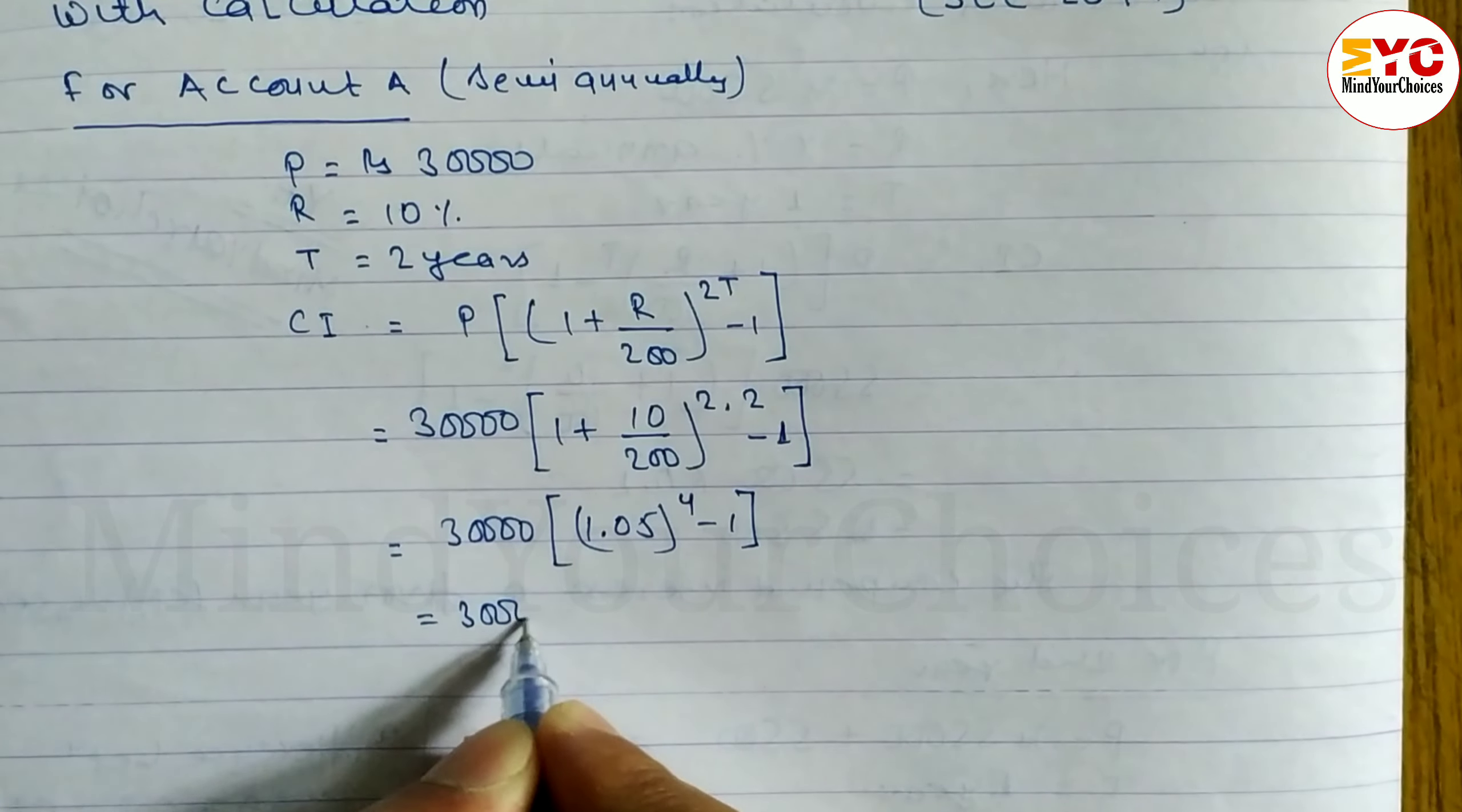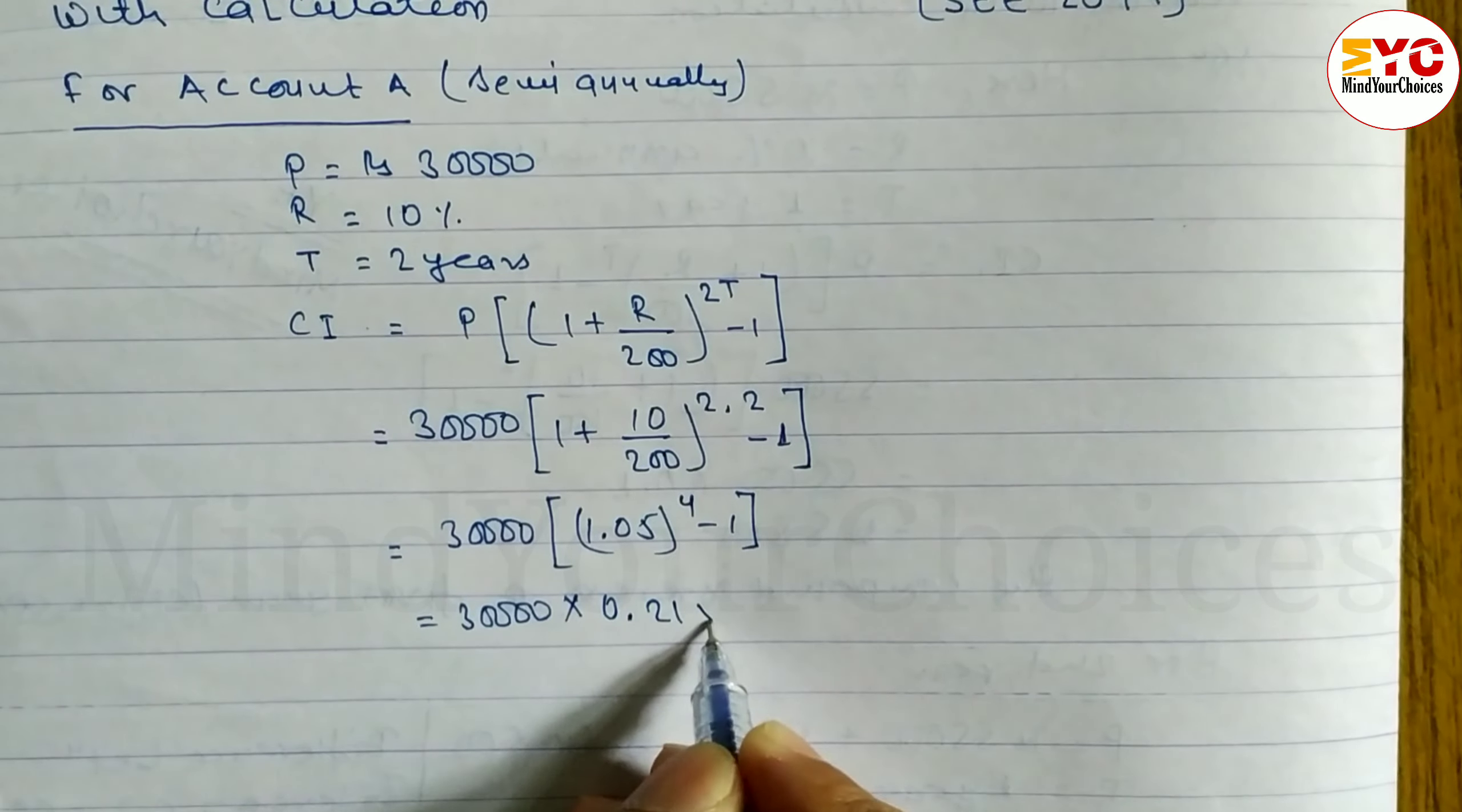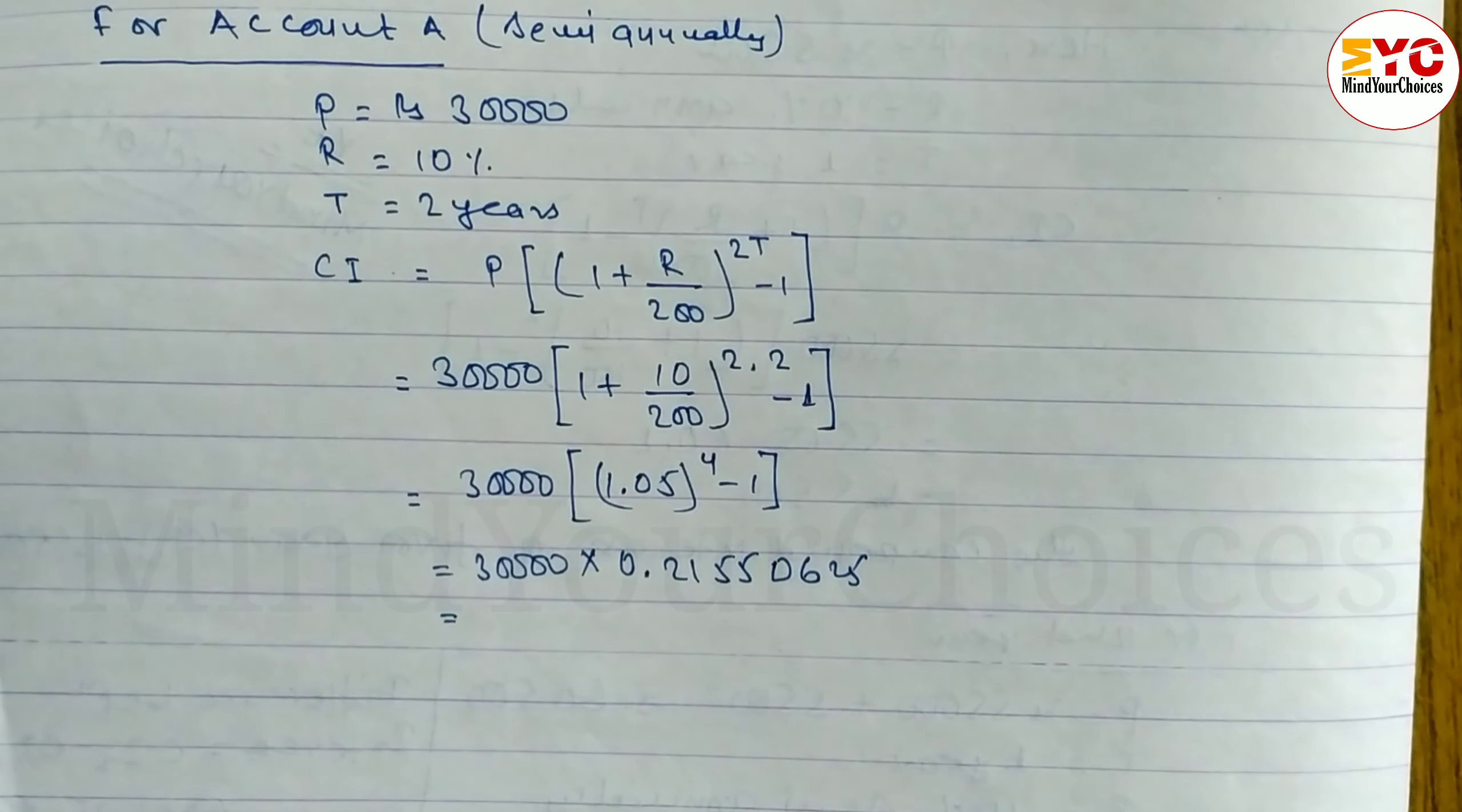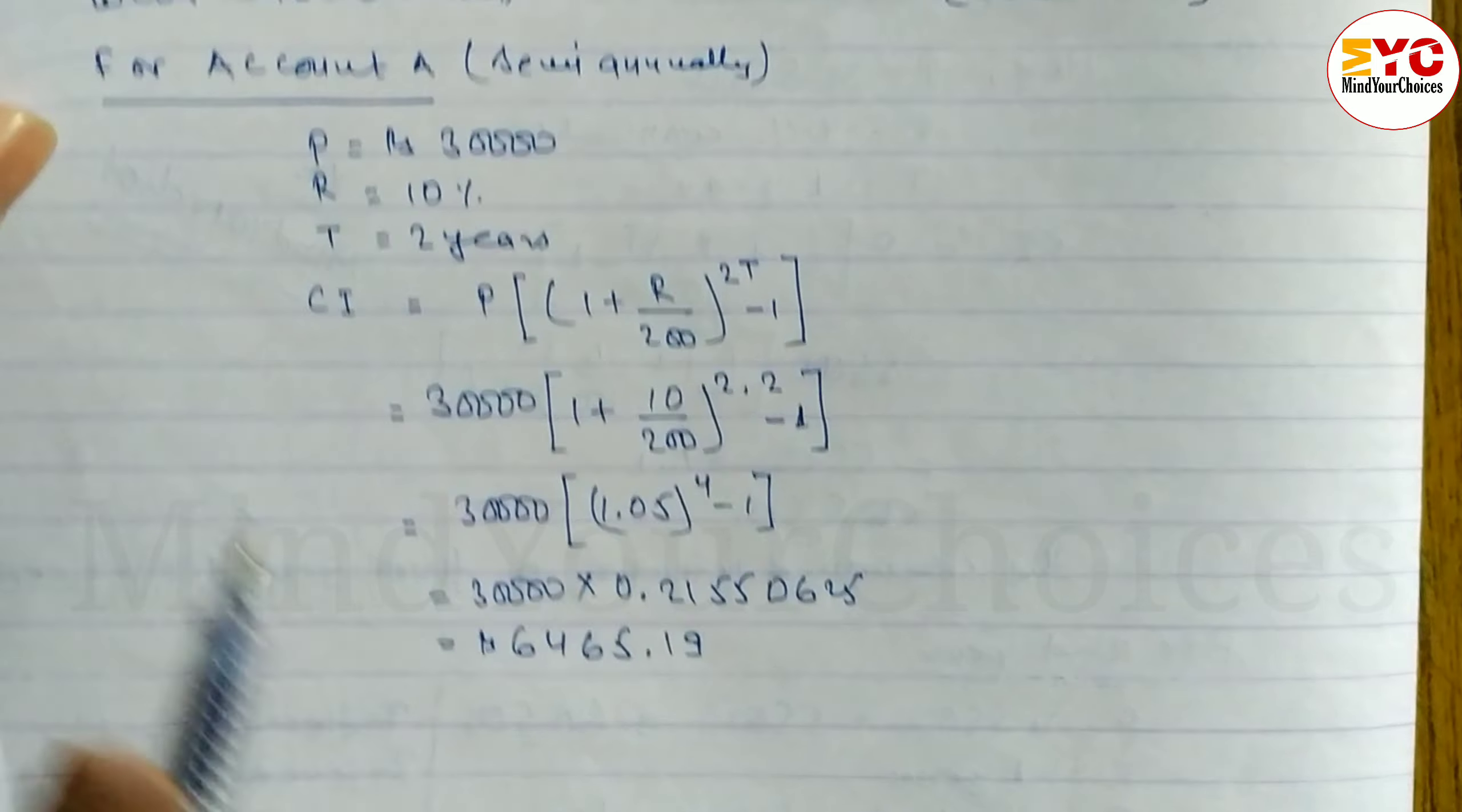30,000 into 1.05. 1.05 power 4, then we have to subtract minus 1. You will get 0.2155 0625. After decimal, full number is the fixed answer. And then you have to multiply by 30,000. You will get 6465.19. So this one is compound interest, semi-compound interest for account A.